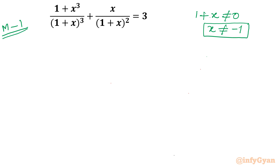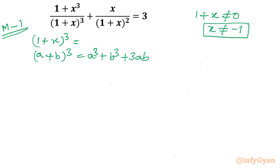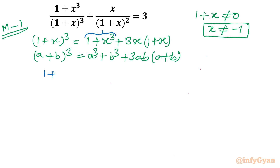Method 1 uses algebraic manipulation. I will apply the identity (a + b)³ = a³ + b³ + 3ab(a + b). So (1 + x)³ = 1 + x³ + 3x(1 + x), which means 1 + x³ = (1 + x)³ − 3x(1 + x). I will target this expression and substitute it.